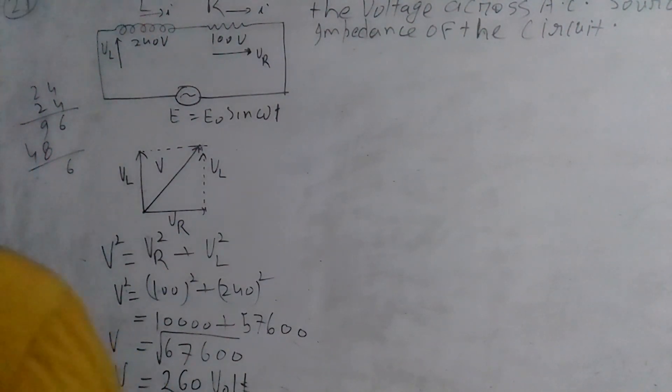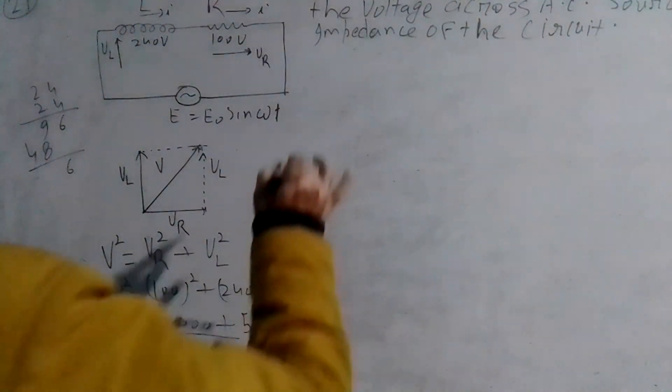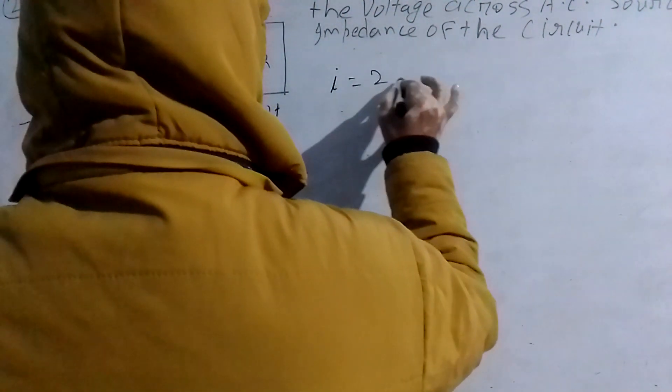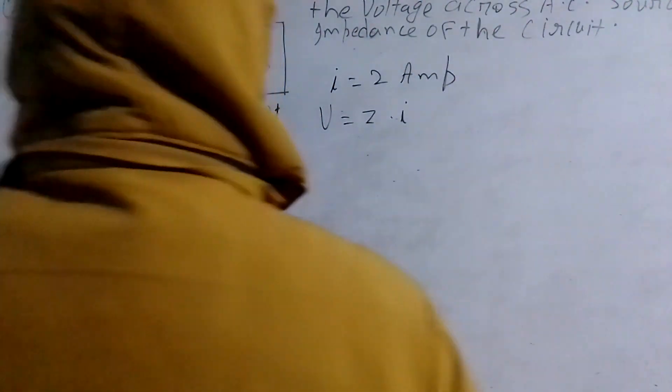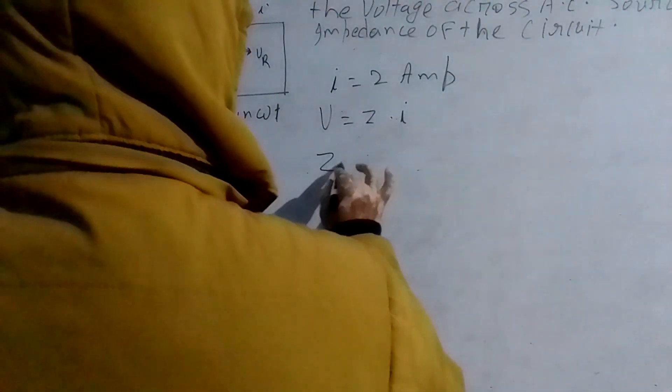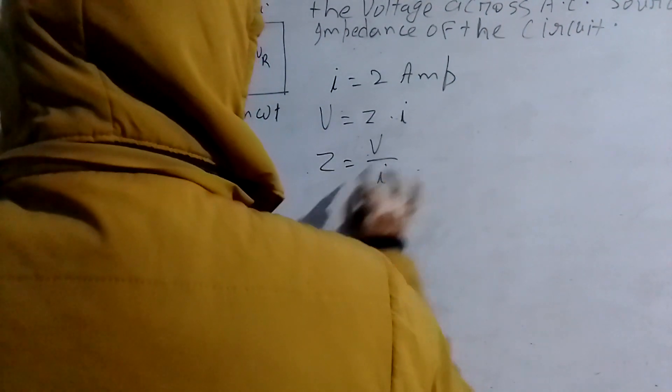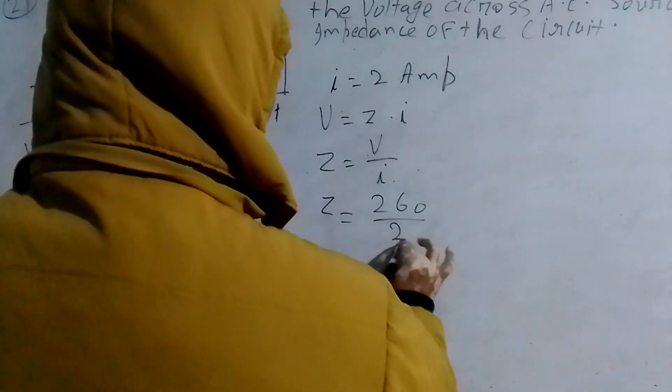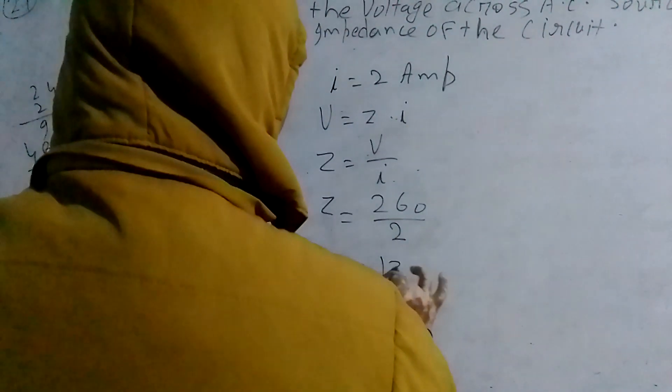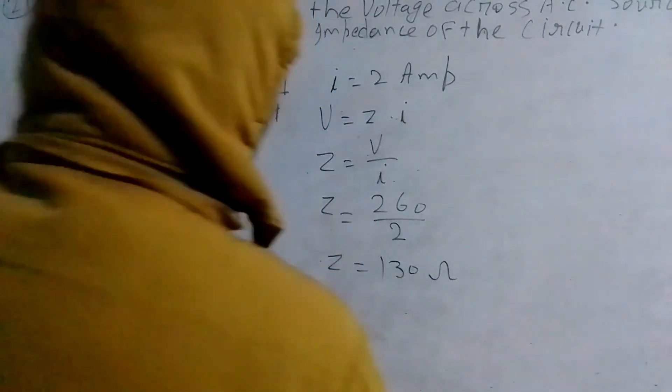The AC source voltage is 260 volts. We have 2 amperes current, so the net voltage equals impedance times current. Impedance equals net voltage divided by current, which is 260 divided by 2, equals 130 ohms. This is the answer.